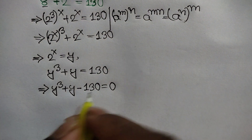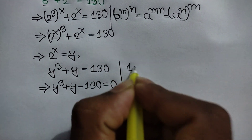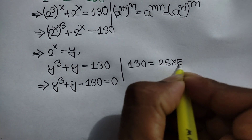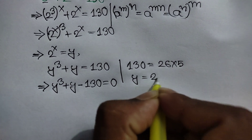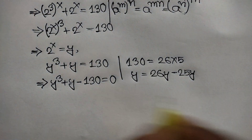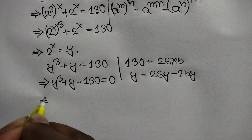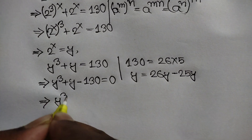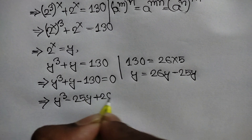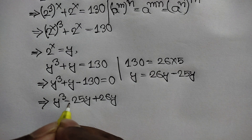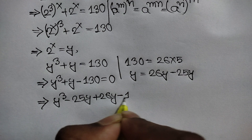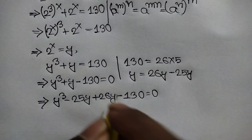Now 130 is equal to 26 times 5, and y can be written as 26y minus 25y. So we rewrite: y cubed minus 25y plus 26y, because 26y minus 25y equals plus y, minus 130, is equal to 0.